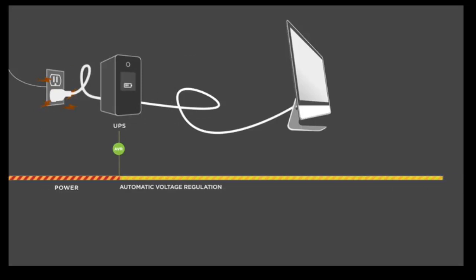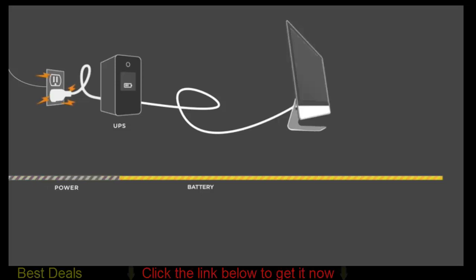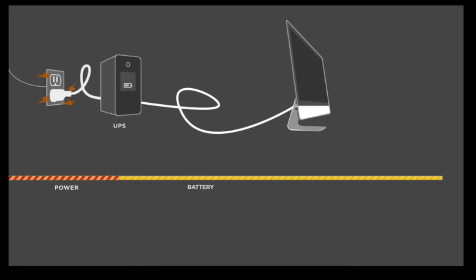In severe weather or during peak demand, utility power can have serious fluctuations. At times like these, the UPS will switch automatically to battery backup power. A UPS system will replace utility power for a few minutes to several hours, depending on the capacity of the UPS and what equipment is connected to it. At minimum, this gives computer users enough time to save their work and shut their computers down safely.